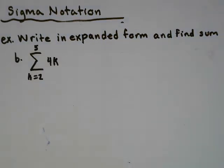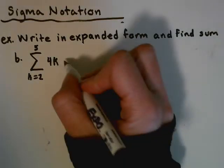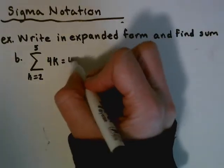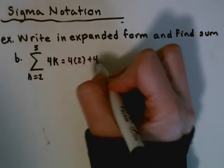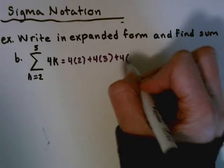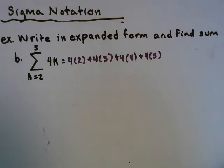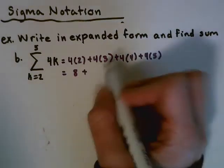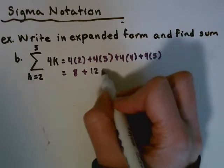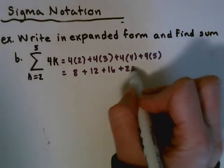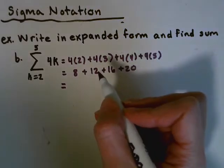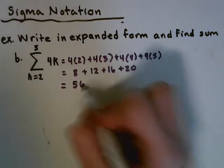Here's another example: from k equals 2 up to 5 of 4k. Note that n is probably the most common variable but it can be anything. So this would be 4 times 2 plus 4 times 3 plus 4 times 4 plus 4 times 5, giving us 8 plus 12 plus 16 plus 20. Adding all of those together we get 56.